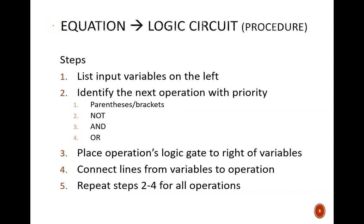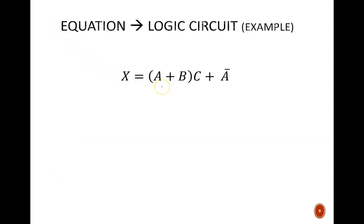Shown here is a procedure for drawing logic circuits from a given equation. We just saw how to do that with standard forms. This procedure would work for those forms, but also any other arbitrary equation. Step 1: List the input variables on the left side of your blank drawing. Step 2: Identify the next logic operation that has priority. This must follow the order of operations, which goes: parentheses, NOT, AND, then OR. Step 3: For the logic operation you just identified, draw the appropriate logic gate to the right of the variables. Step 4: Draw lines to connect variables to logic gates. And Step 5: Repeat this process until all the operations have been drawn. Let's apply that procedure to the example equation: X equals A or B, ended with C, or A'.